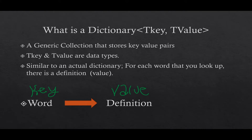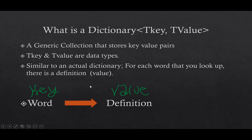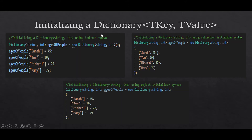A dictionary is much more flexible than an actual dictionary. T-key and T-value are data types — you can pass in any types you want. They can be a combination of different types or the same types. As it's a generic collection, you can pass in any data type into either of these parameters. The word we search up — say 'car' — is the key, and the definition of car is the value.